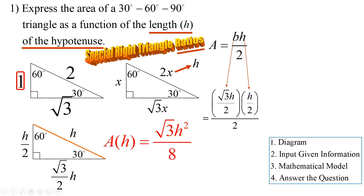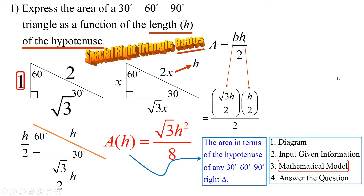That is the area of a 30-60-90 special right triangle in terms of the hypotenuse — we've just come up with a formula. That's our mathematical model. That's what a mathematician does at the college level when coming up with their own theorems.